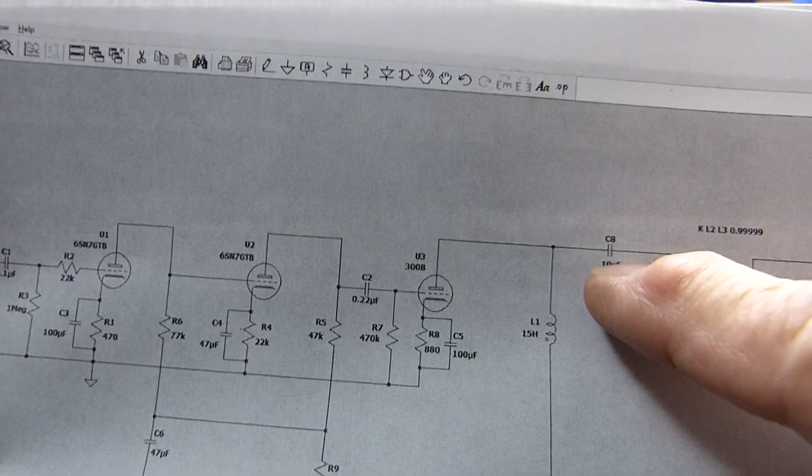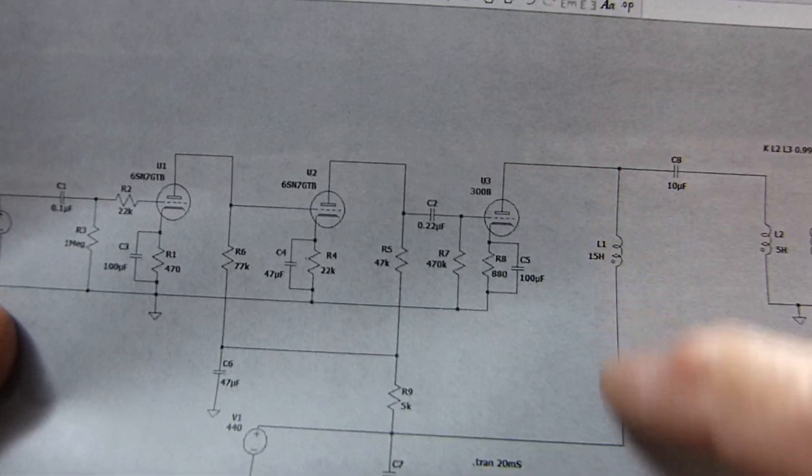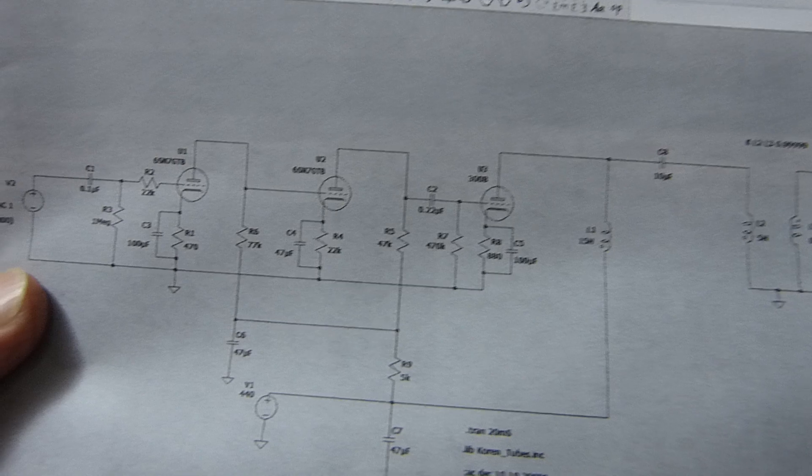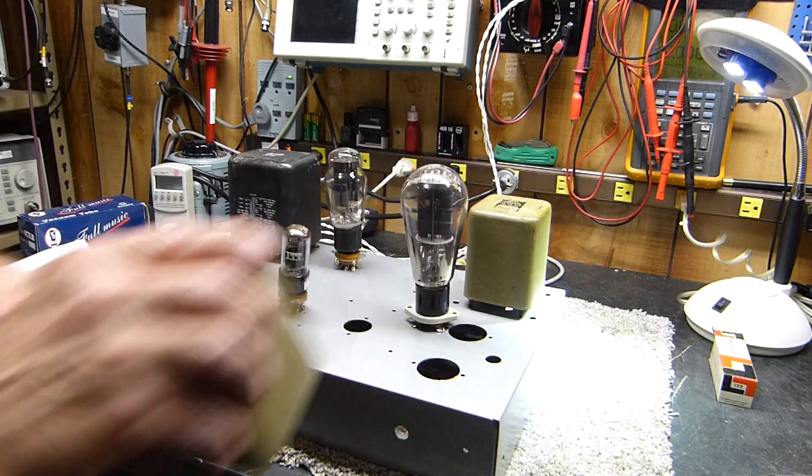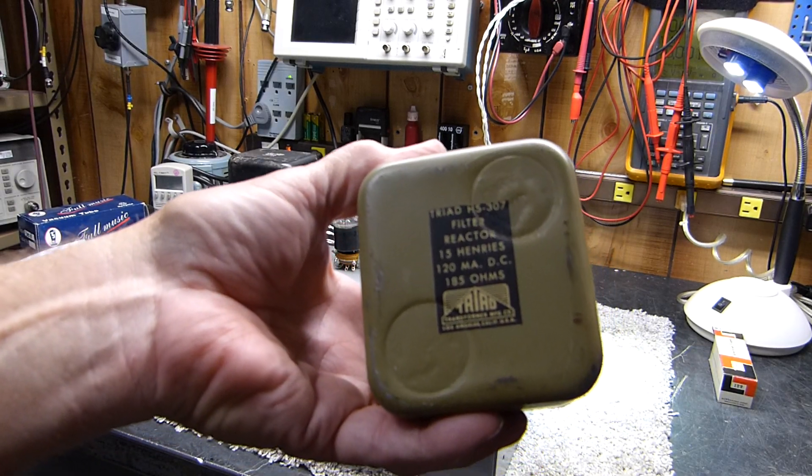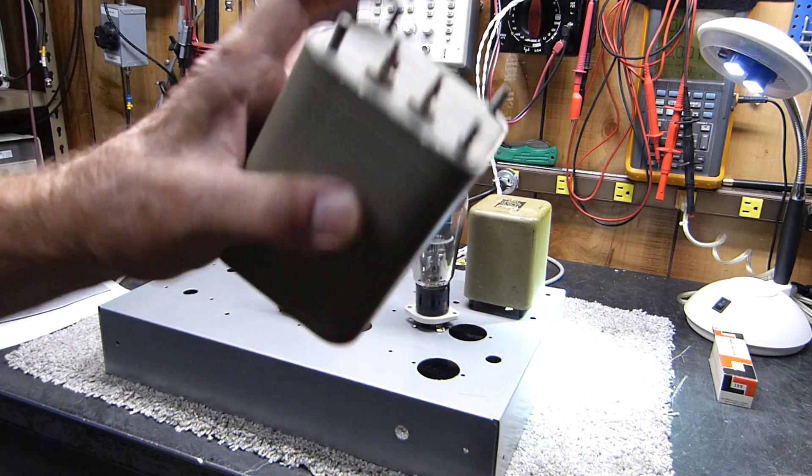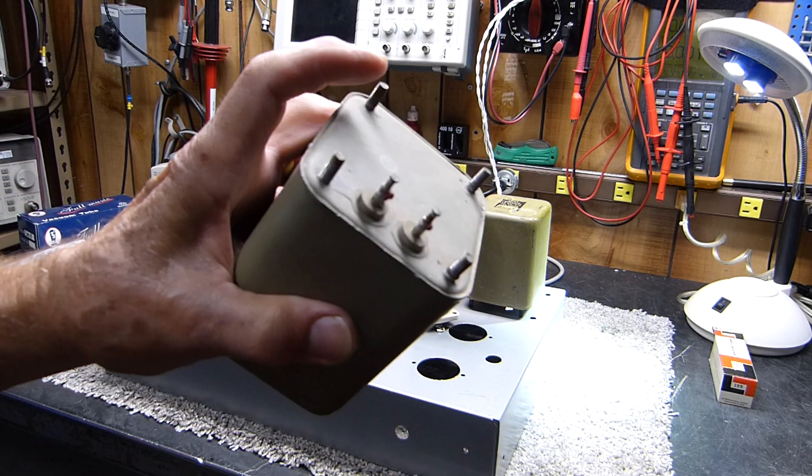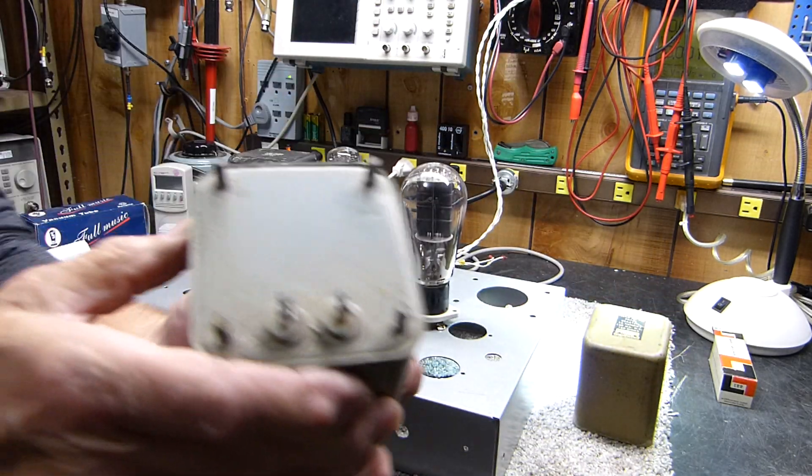I got a lot of chokes, but I'm really rethinking a lot of this. Here's the choke I'm thinking about using - I got two of these guys. 15 Henrys at 120 milliamps, big Triad military surplus stuff I got. So much of this. It hasn't been soldered to - well, yeah it has.